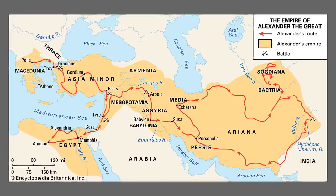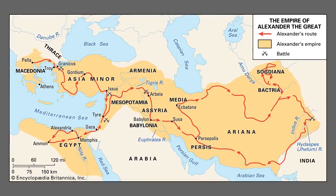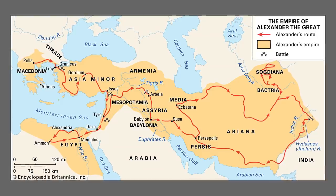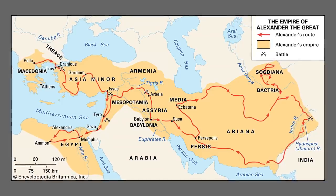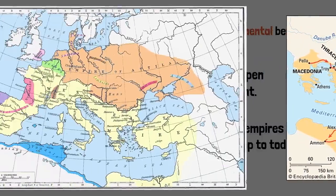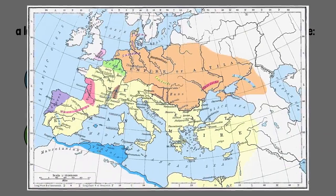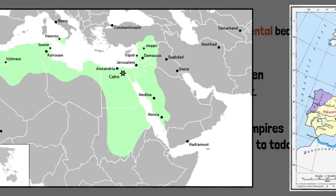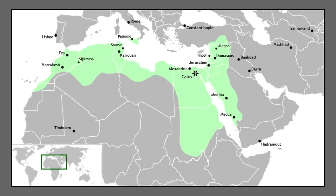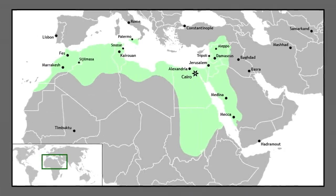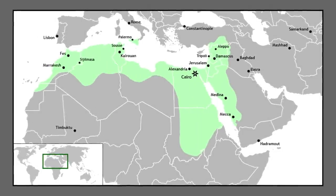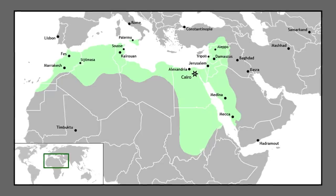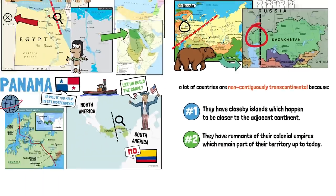There are also countries and especially empires that used to be transcontinental throughout history. The empire of Alexander the Great is a good example, as is the empire of the Huns, and the many emirates and caliphates of Muslim powers of North Africa and the Middle East — such as the Fatimid Caliphate, which was actually in three continents: Europe, Asia, and Africa — and many others throughout history.